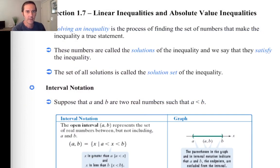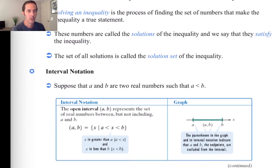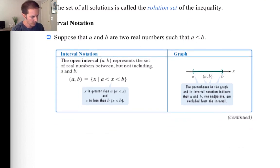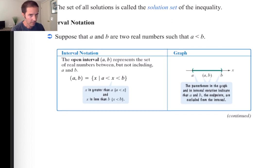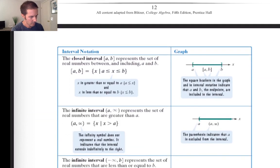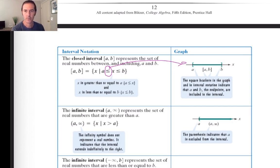Linear inequalities and absolute values are going to require heavy use of interval notation, so we'll make sure to review that. When you're working with a strict inequality, like a less than or a greater than symbol, we're going to see the use of parentheses. And if we have a less than or equal to symbol, or greater than or equal to symbol, then we'll see these square brackets. Sometimes we'll see a mixture of both.